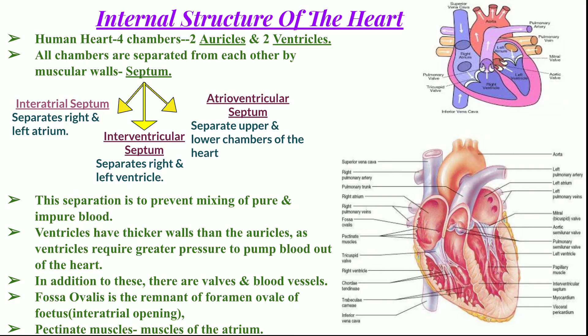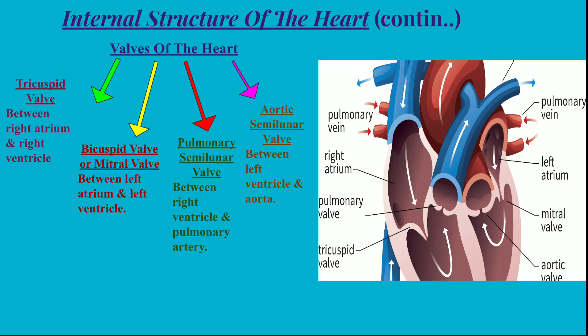All these chambers are separated from each other by septum — interatrial septum, interventricular septum, and atrioventricular septum. The interatrial septum separates the two atria, the interventricular septum separates the two ventricles, and the atrioventricular septum separates the atrium from the ventricle.